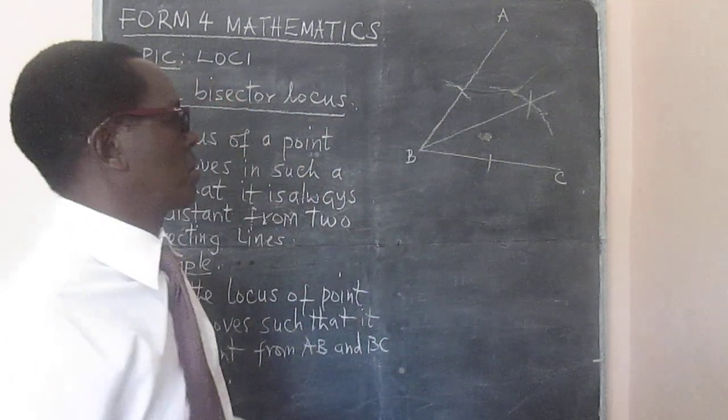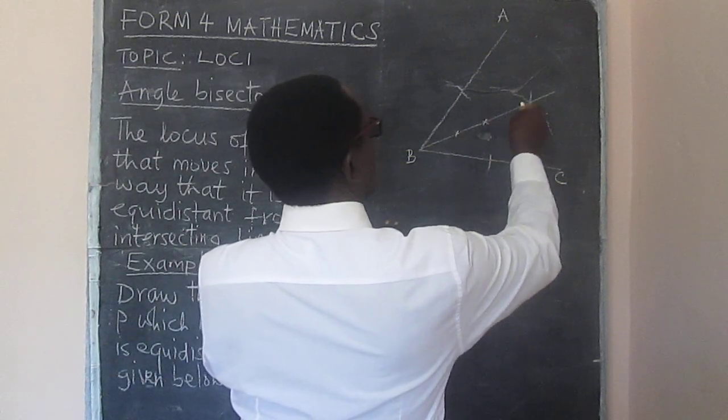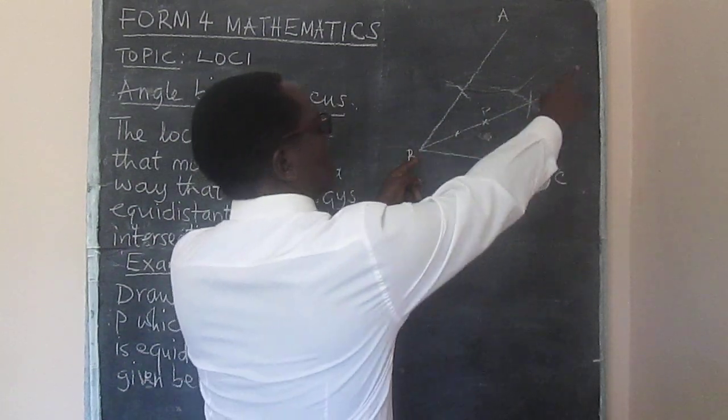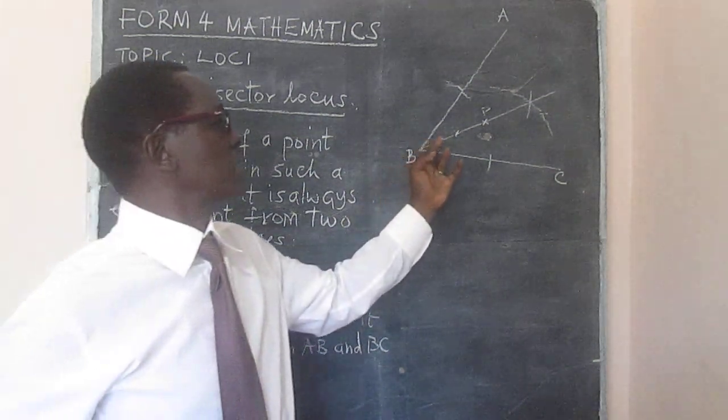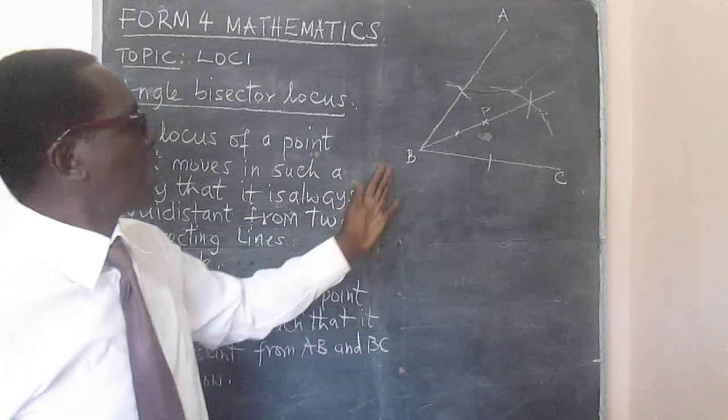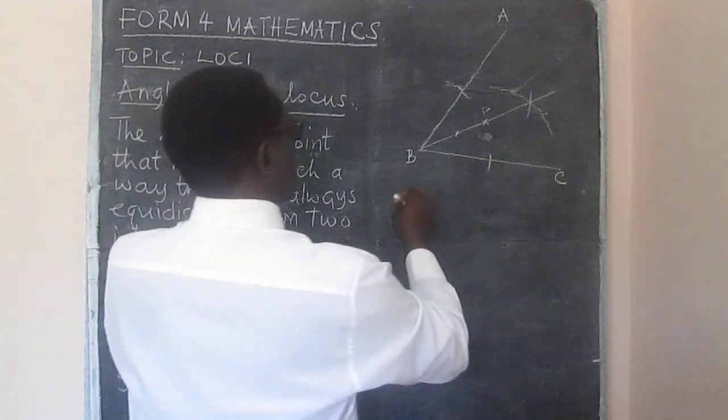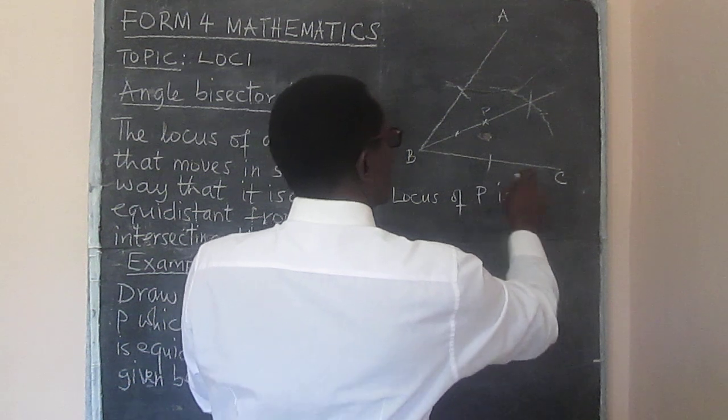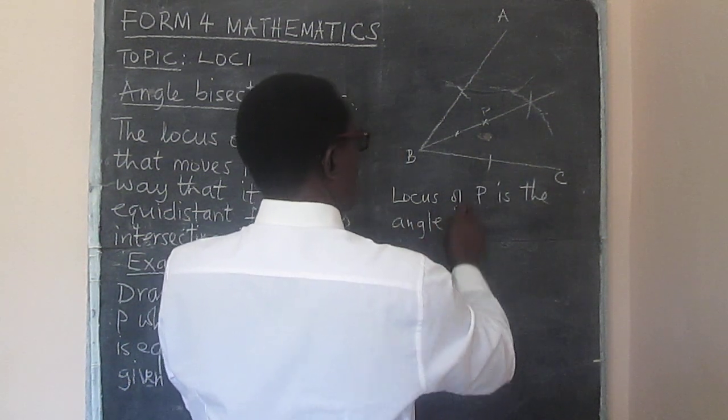P can be anywhere along here. All these are P's. The path followed by P is along the angle bisector. Therefore we have the locus. The locus of point P is the angle bisector of angle ABC.